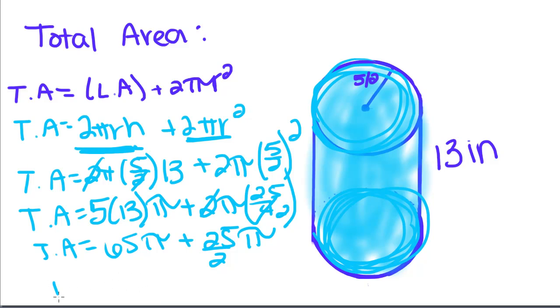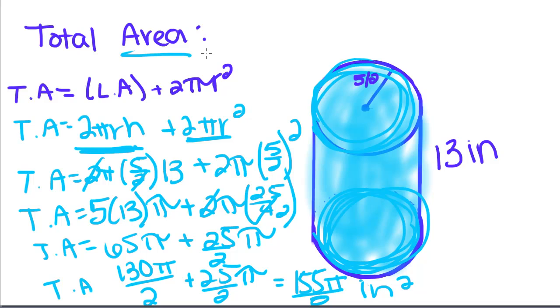And I'm going to get a common denominator. If I get a common denominator, this is going to be 130π over 2, and this is 25π over 2. So then we get 155π/2 inches squared, because area is always squared units.